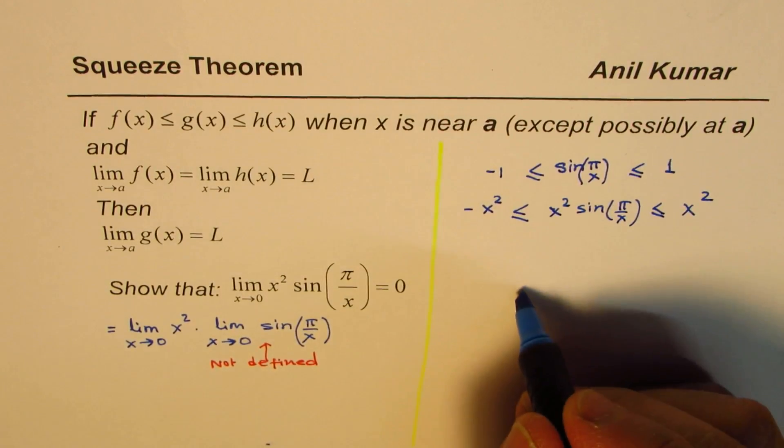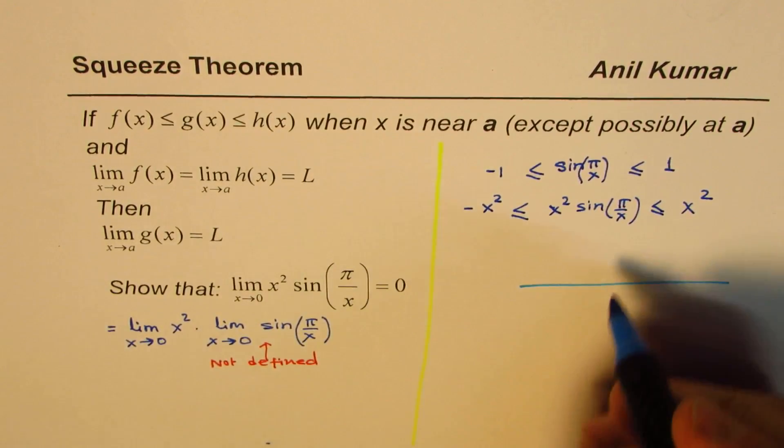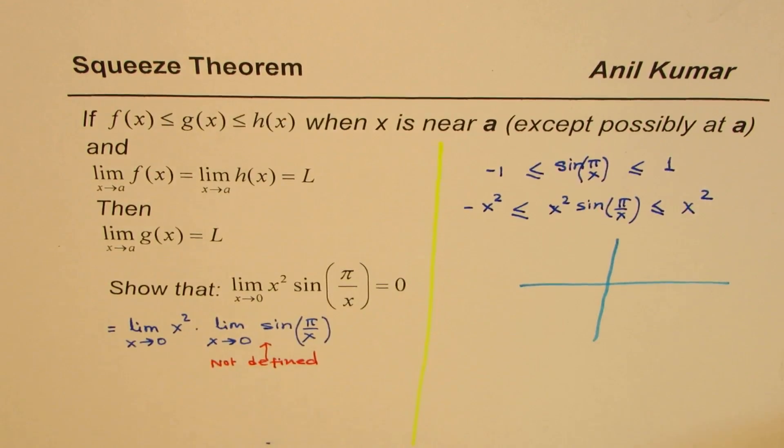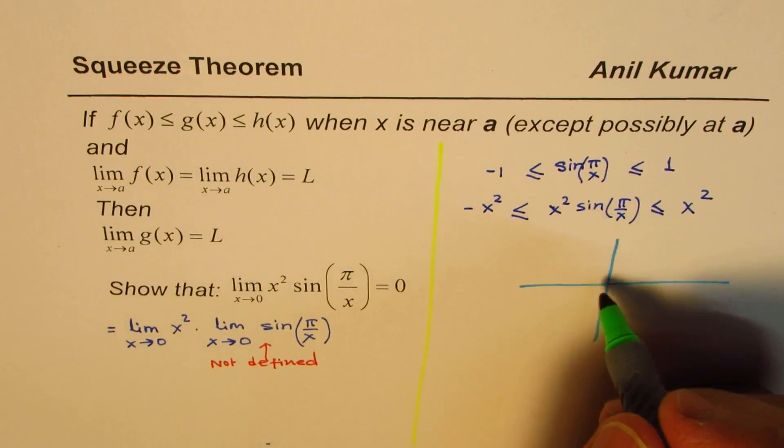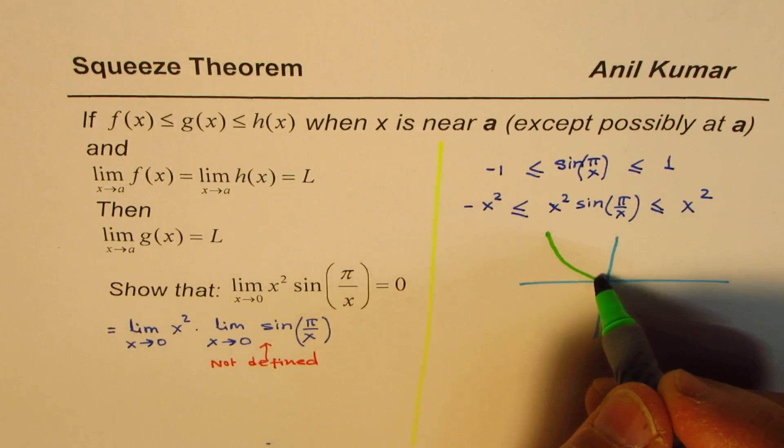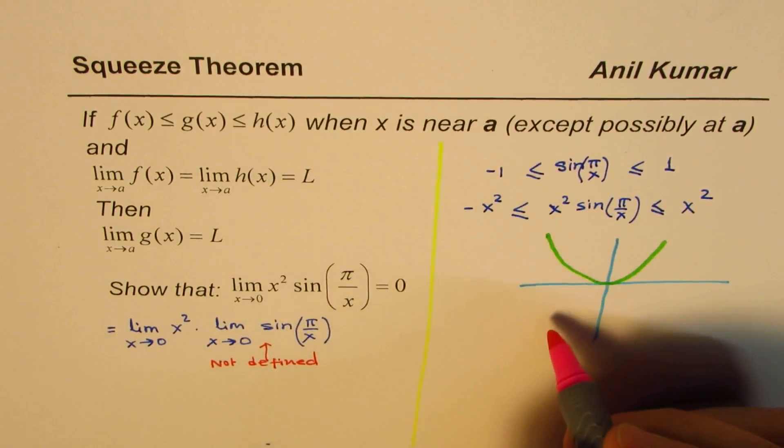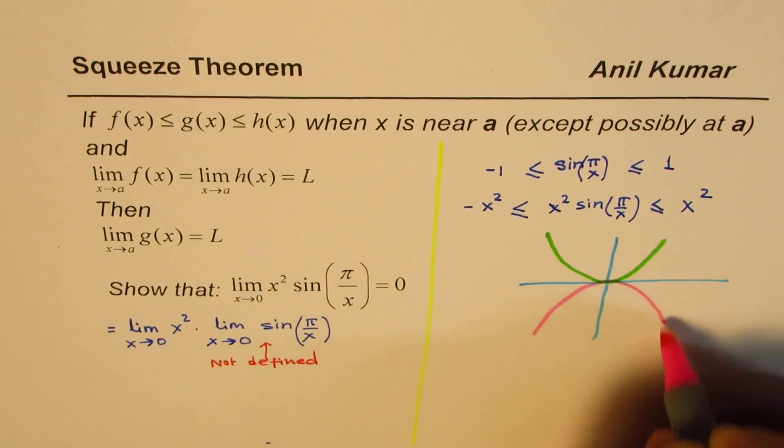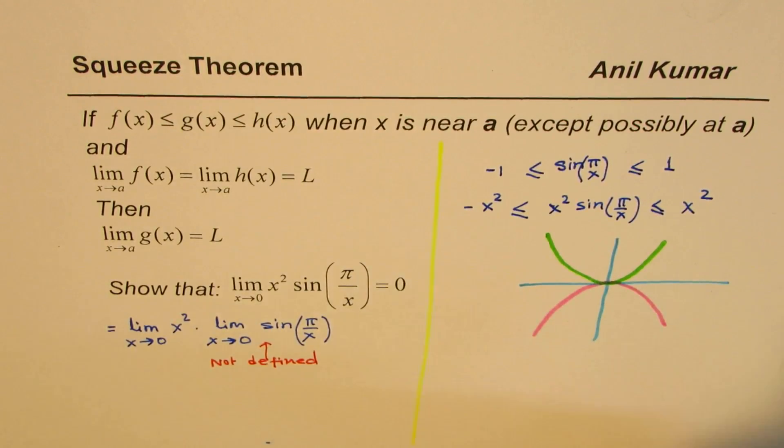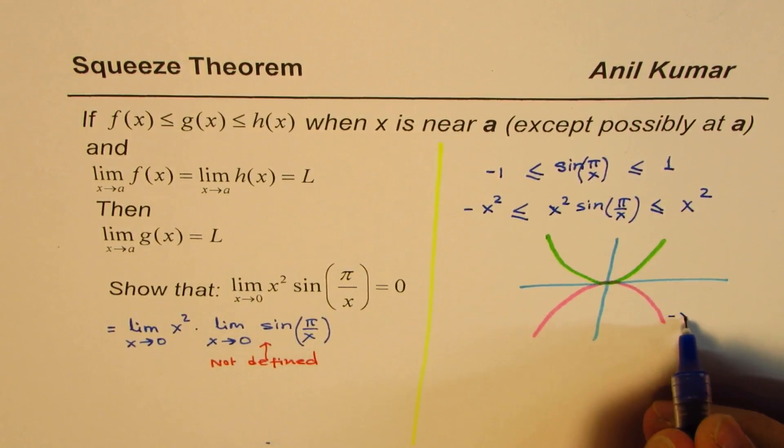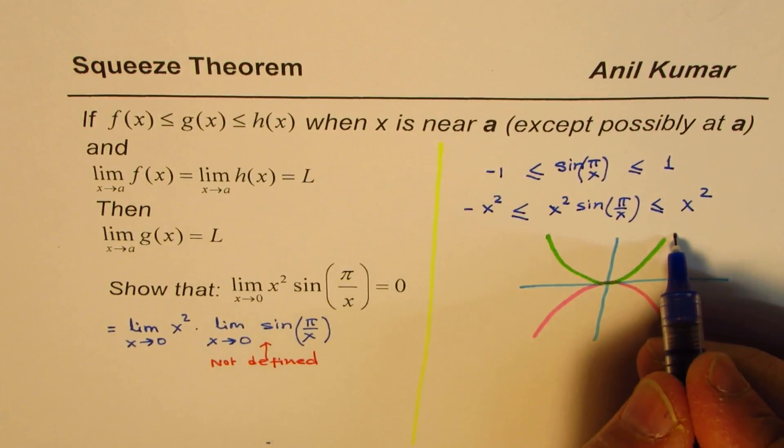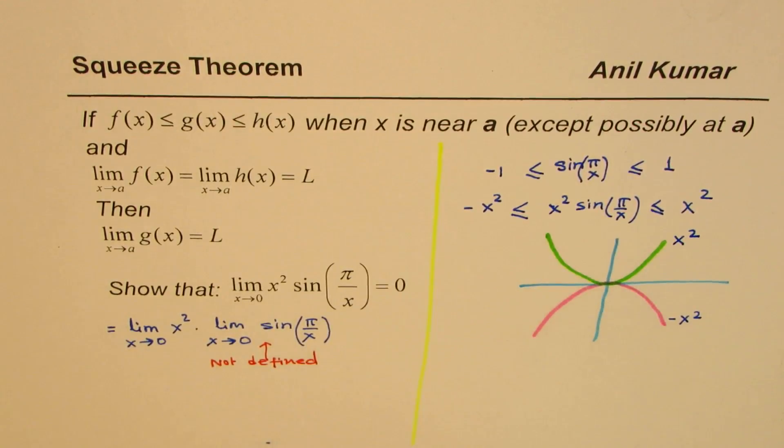So what you have here is something like this. The graph of x² will be kind of like this. Graph of -x² will be kind of like this. So these are the two graphs. This is -x², and this one is x².